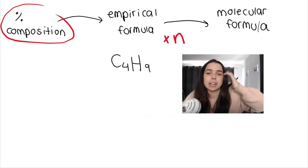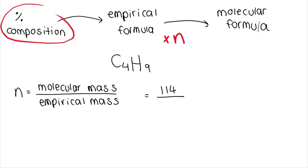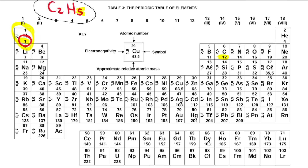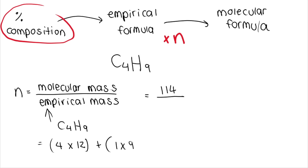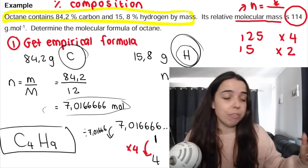Now calculate n. The relative molecular mass given in the question is 114. The empirical mass of C₄H₉ is (4 × 12) + (9 × 1) = 48 + 9 = 57 g/mol. So n = 114 ÷ 57 = 2. Multiply the empirical formula by 2: C₄ × 2 = C₈, H₉ × 2 = H₁₈. The molecular formula is C₈H₁₈.